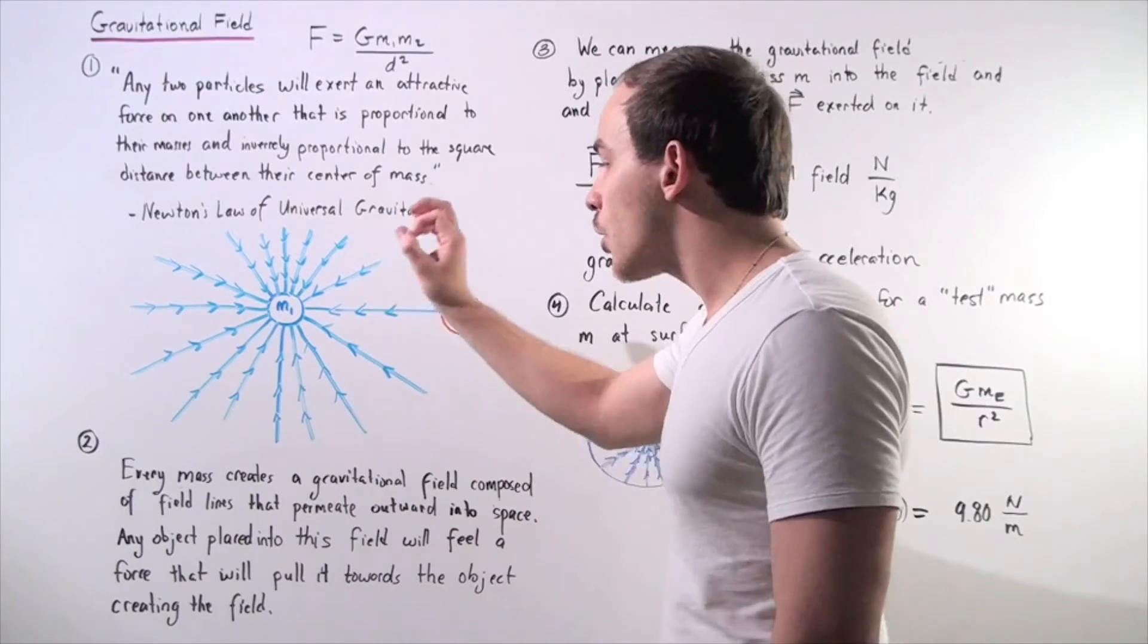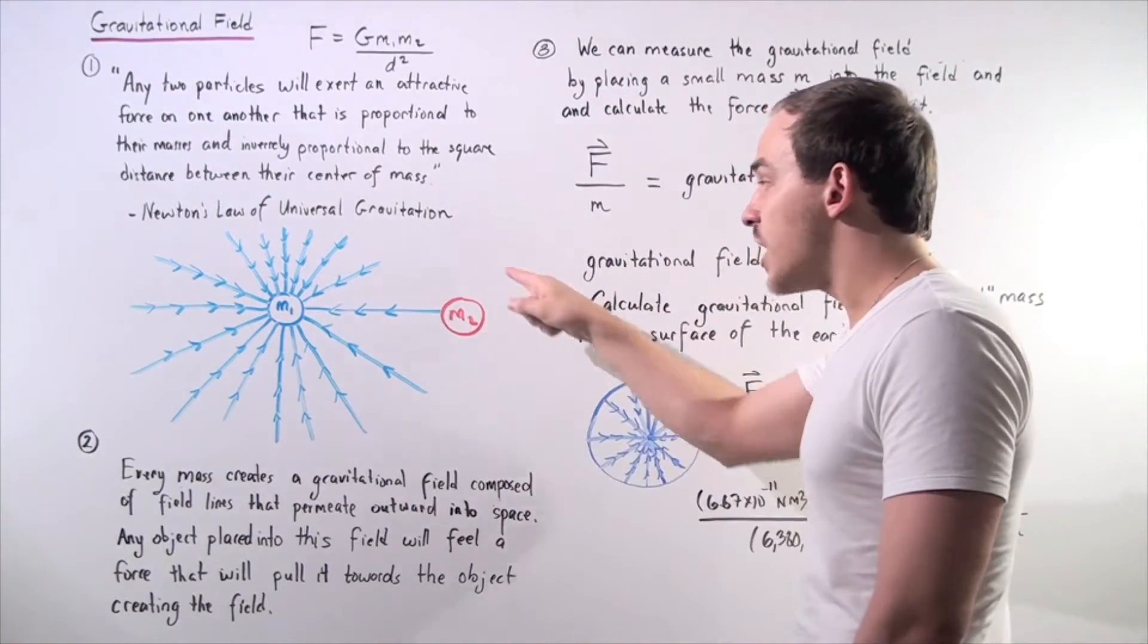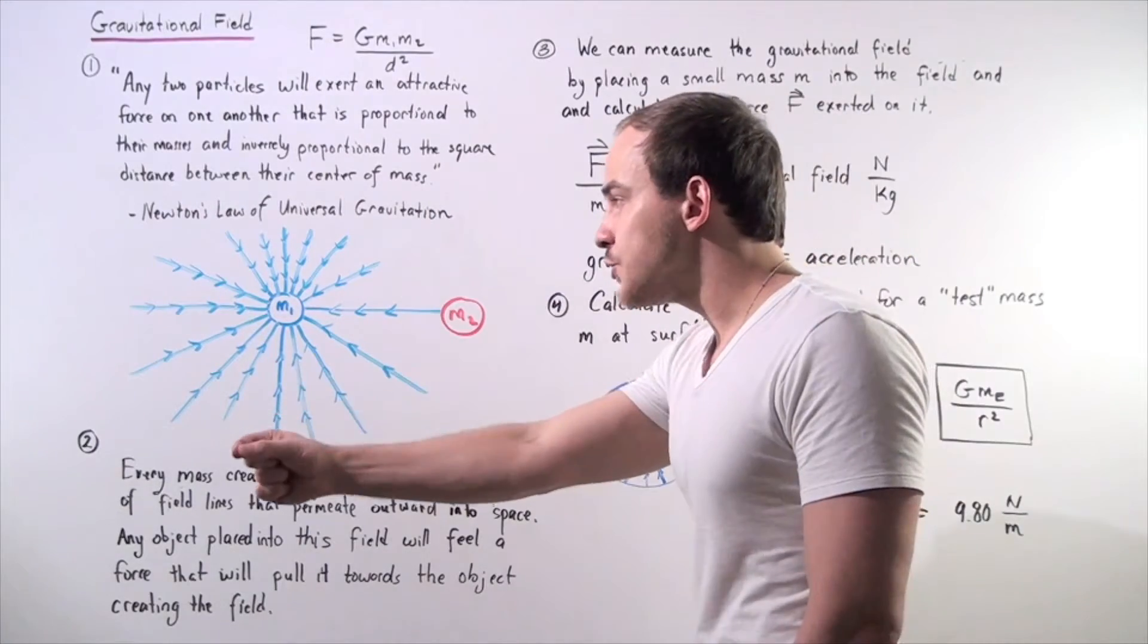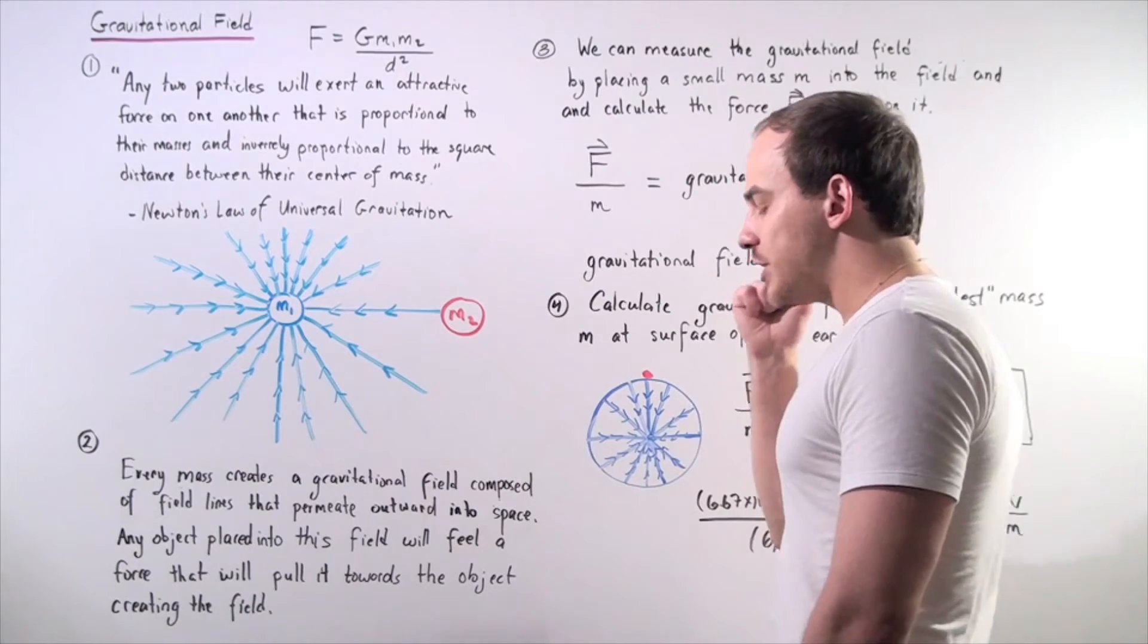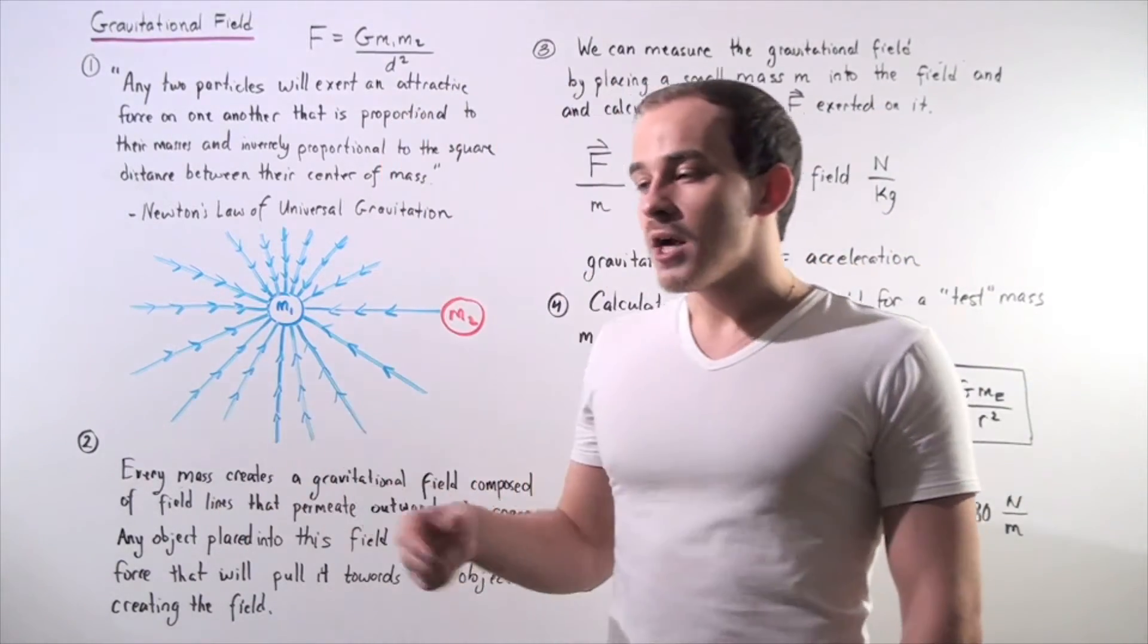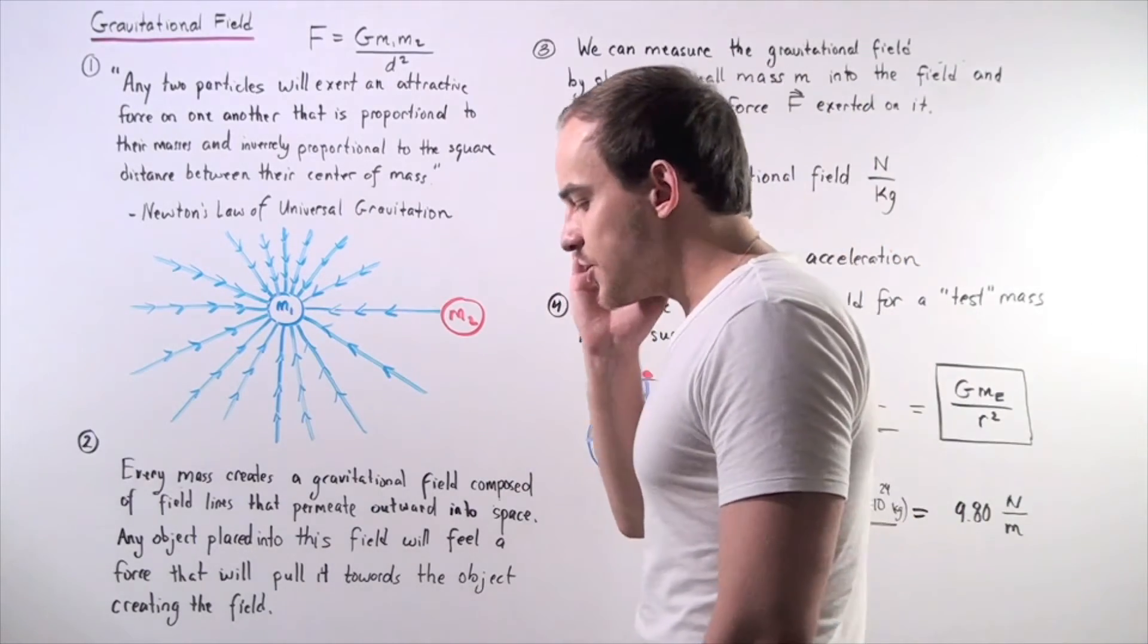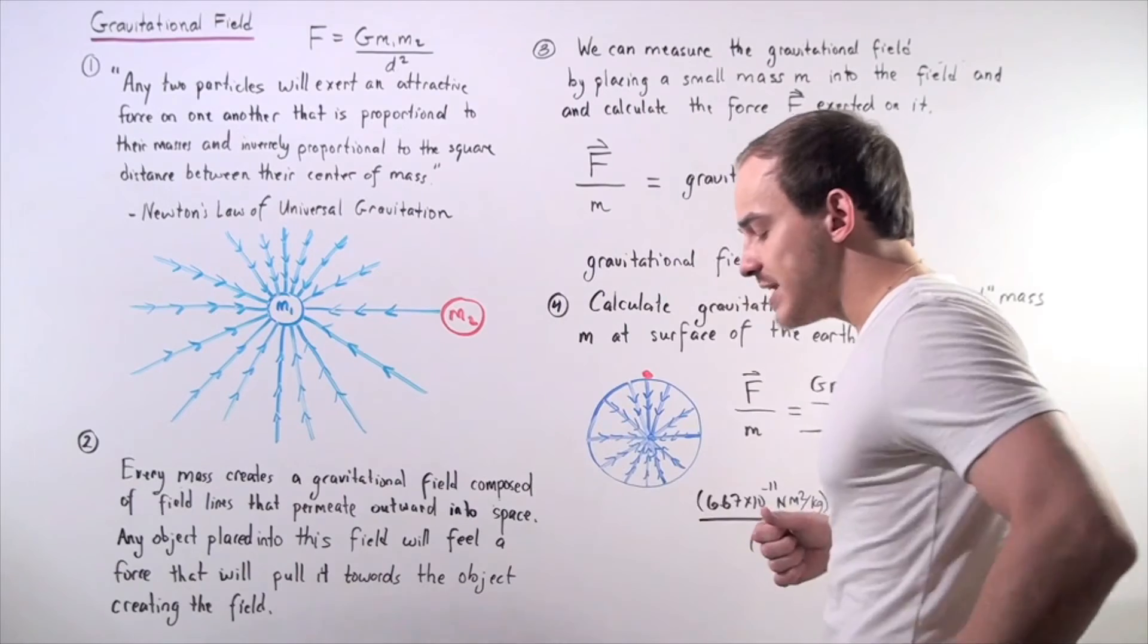But you should know that our marker, the object number two, actually does in fact create a force on the earth, object number one. The magnitude of the two forces is exactly the same, but our direction is different. Now, in order to explain this concept of gravity, which is an invisible force, we came up with something known as a gravitational field, or scientists came up with something known as a gravitational field.